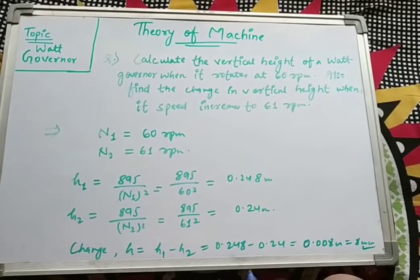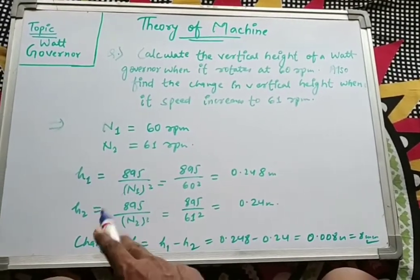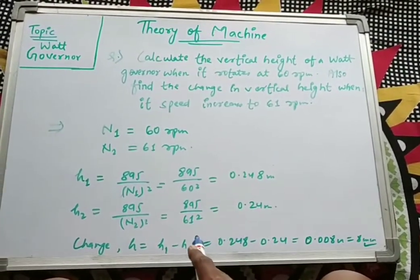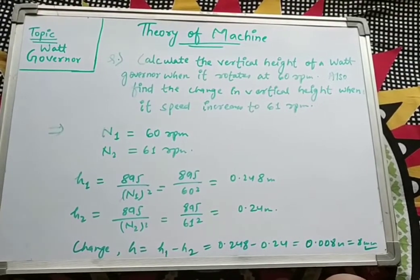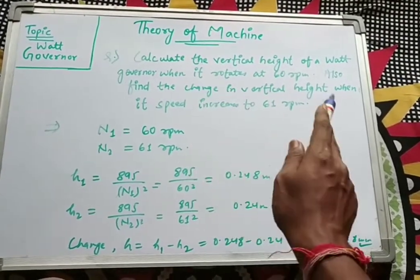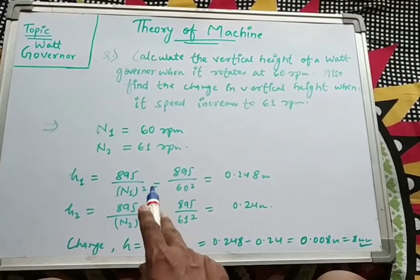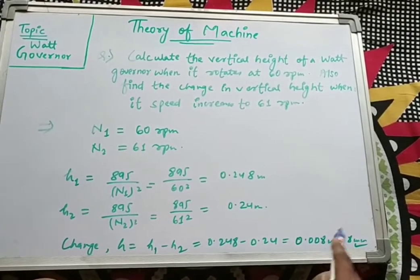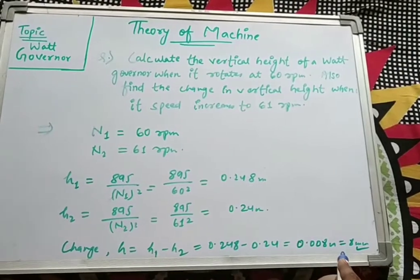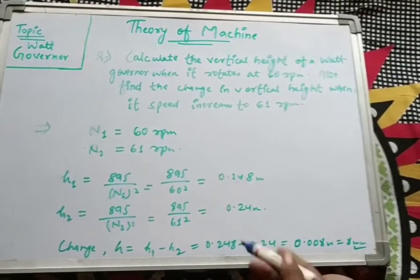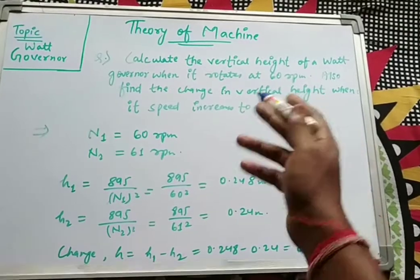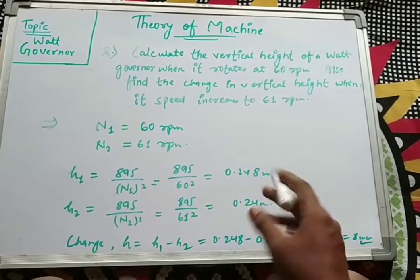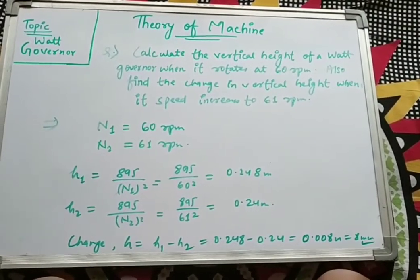For N2 = 61 rpm: h2 = 895 / 61² = 0.24 meters. The change in vertical height Δh = h1 − h2 = 0.248 − 0.24 = 0.008 meters, or 8 millimeters. This is a simple numerical - we just put the formula, place the data from the question, and solve to get the answer. I hope you all understand the Watt governor and the numerical based on it. Thank you for your attention.